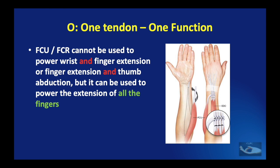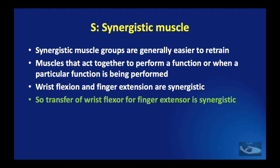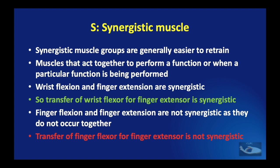The next factor is the S, which stands for synergistic muscle transfer. Synergistic muscles refer to those muscles that act together to perform a particular function. When muscles from these groups are used for the transfer, they are generally easier to retrain. For example, wrist flexion and finger extension are synergistic, so the transfer of a wrist flexor for a finger extensor is synergistic. But finger flexion and finger extension are not synergistic, so transfer of a finger flexor for a finger extensor is obviously not synergistic.